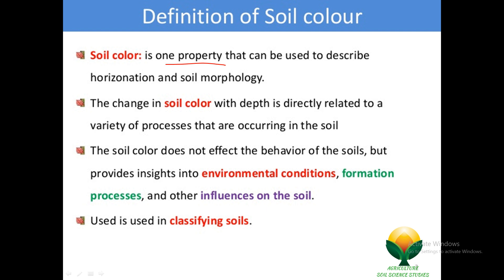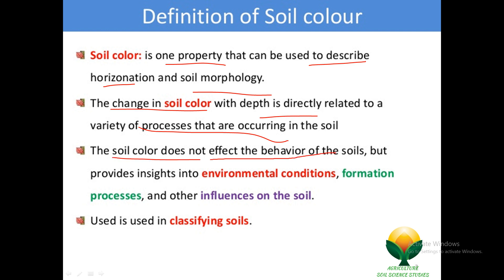First, the definition of soil color. Soil color is one property that can be used to describe horizonation and soil morphology. The change in soil color with depth is directly related to the variety of processes occurring in the soil. Soil color does not affect the behavior of the soil, but provides insight into environmental conditions, formation processes, and other influences on the soil. It is also used in classifying the soil.